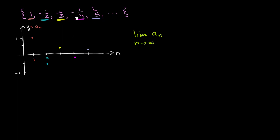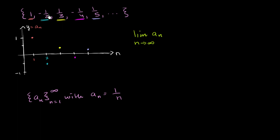Let's think about whether we can define a sub n explicitly. We can define the sequence as a sub n, where n starts at 1 and goes to infinity. If we ignore the sign, it looks like 1 over n. But the signs oscillate: positive, negative, positive, negative. We could multiply by negative 1 to the n, but we want the first term positive, so we use negative 1 to the n plus 1 power. When n equals 1, that gives negative 1 squared times 1, which is 1. So a sub n equals negative 1 to the n plus 1 power over n.